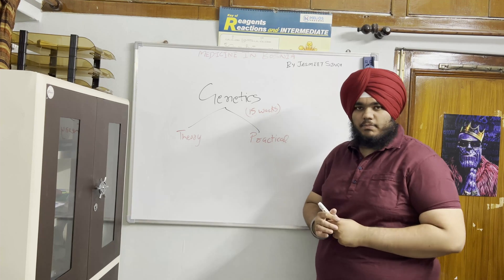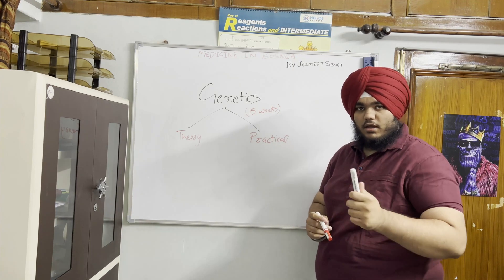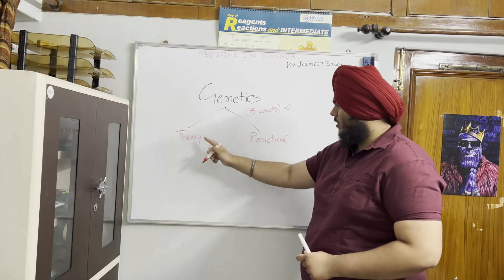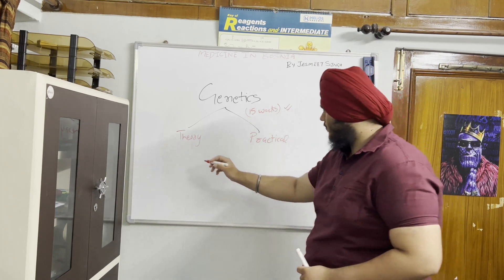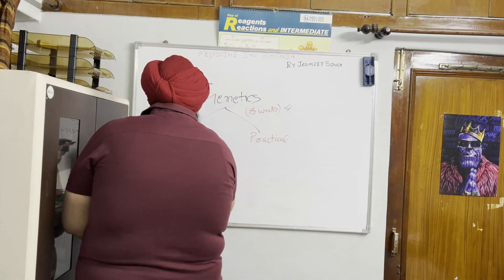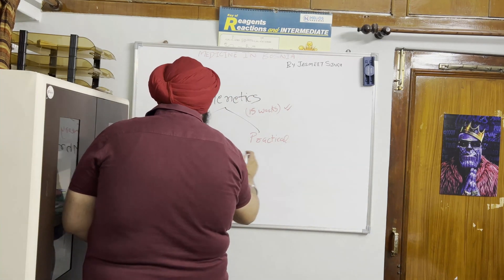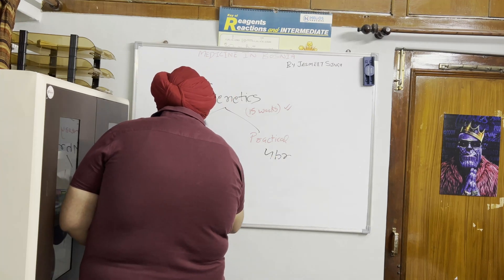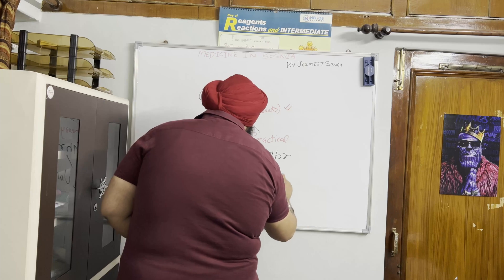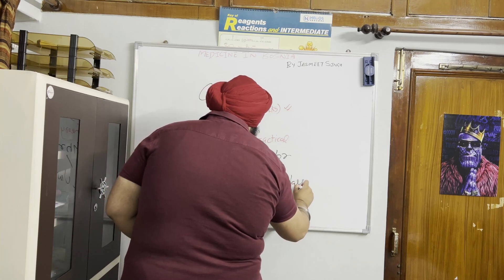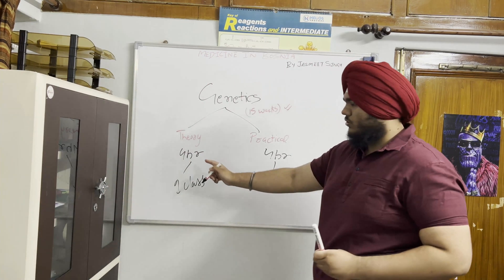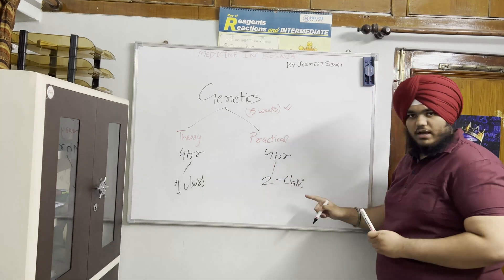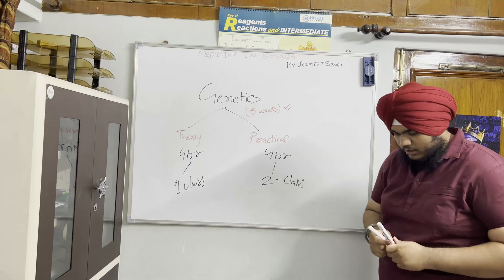Genetics is the third important subject, but it will be taught only for 15 weeks in the second semester. It also includes theory and practicals. It is covered for four hours in one class and four hours across two classes.